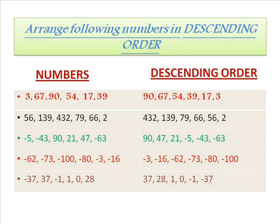First example: 3, 67, 90, 54, 17, 39. These numbers can be arranged in descending order as 90, 67, 54, 39, 17, and 3. Second example: 56, 139, 432, 79, 66, 2. Order is: 432, 139, 79, 66, 56, and 2.